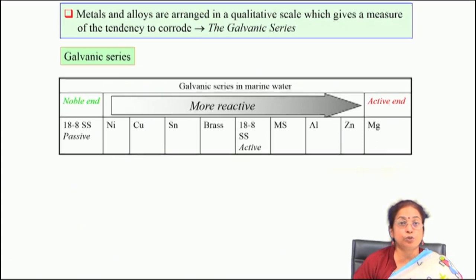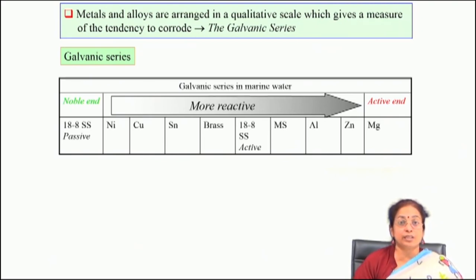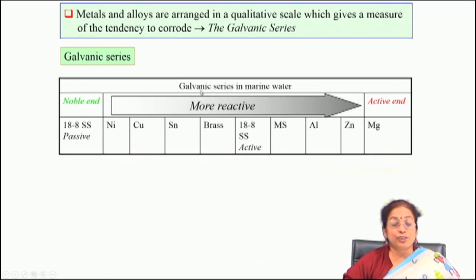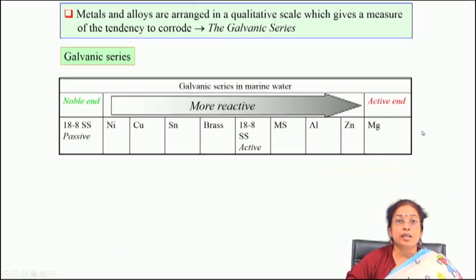To prevent galvanic corrosion, you must choose materials that are very close in the galvanic series. This is a typical example of the galvanic series where different steels, 18-8 stainless steel (passive and noble), nickel, copper, tin, brass, aluminum, zinc, and magnesium are sequentially arranged from the noble end to the active end in marine water environment.